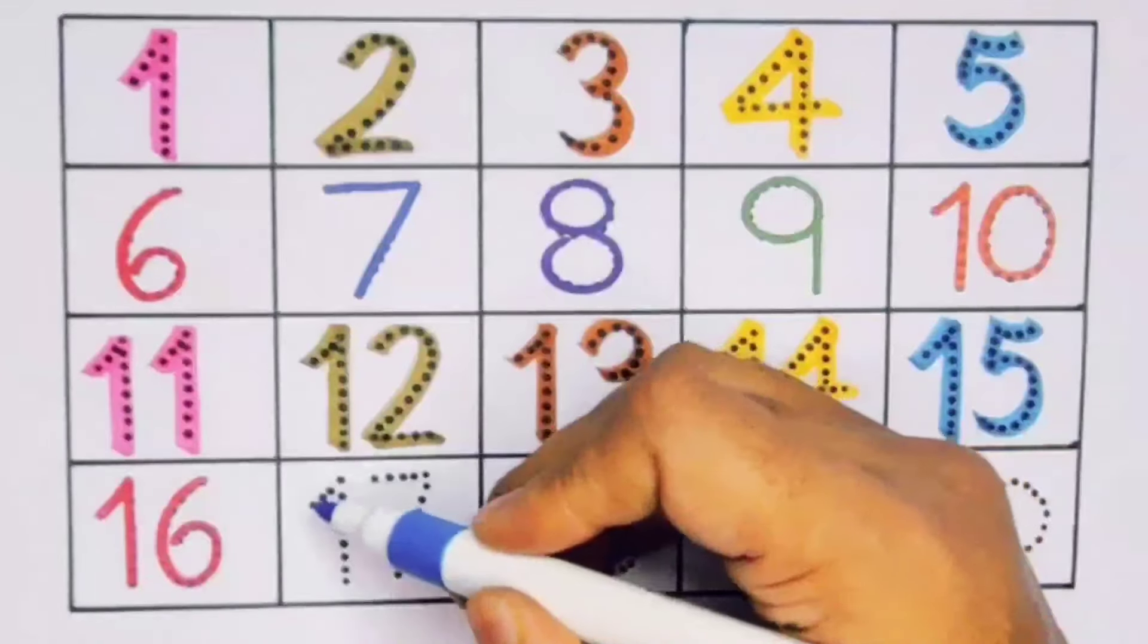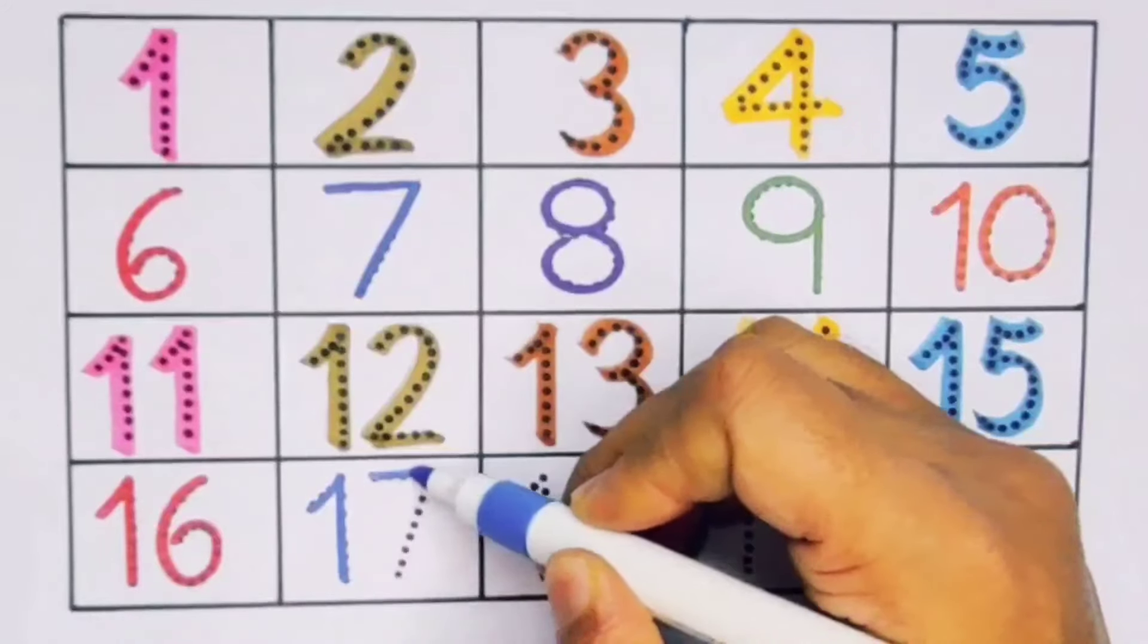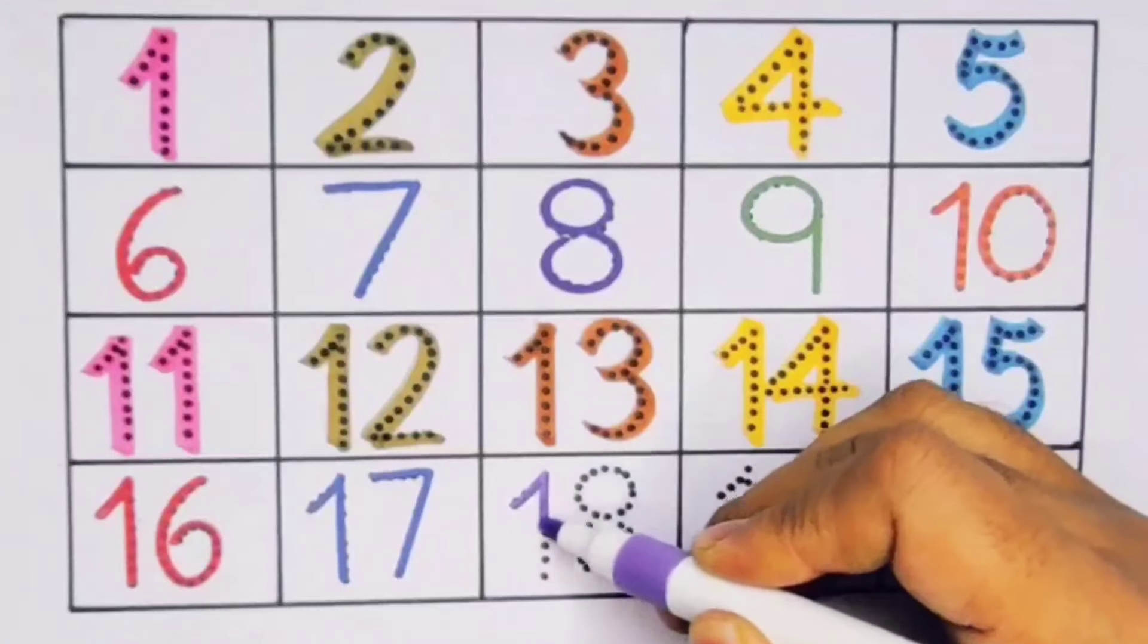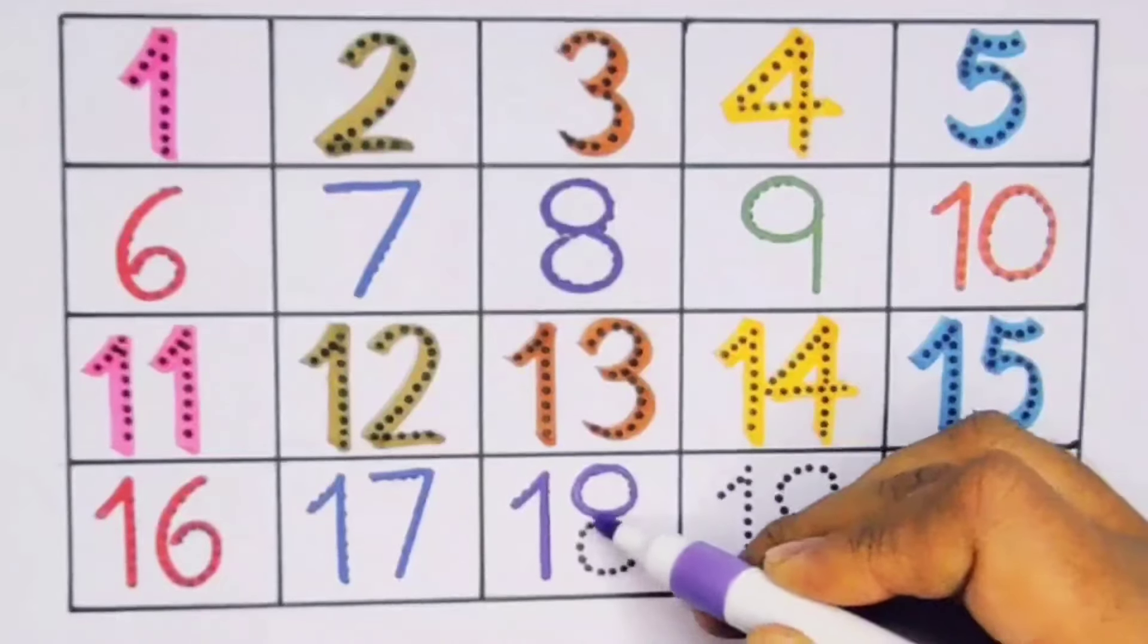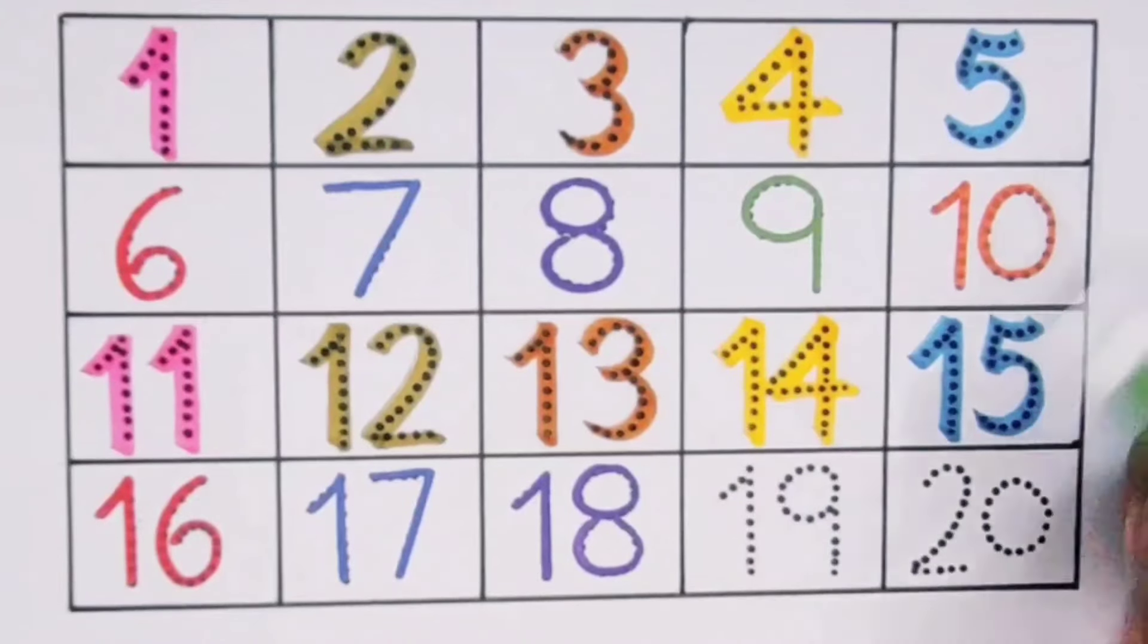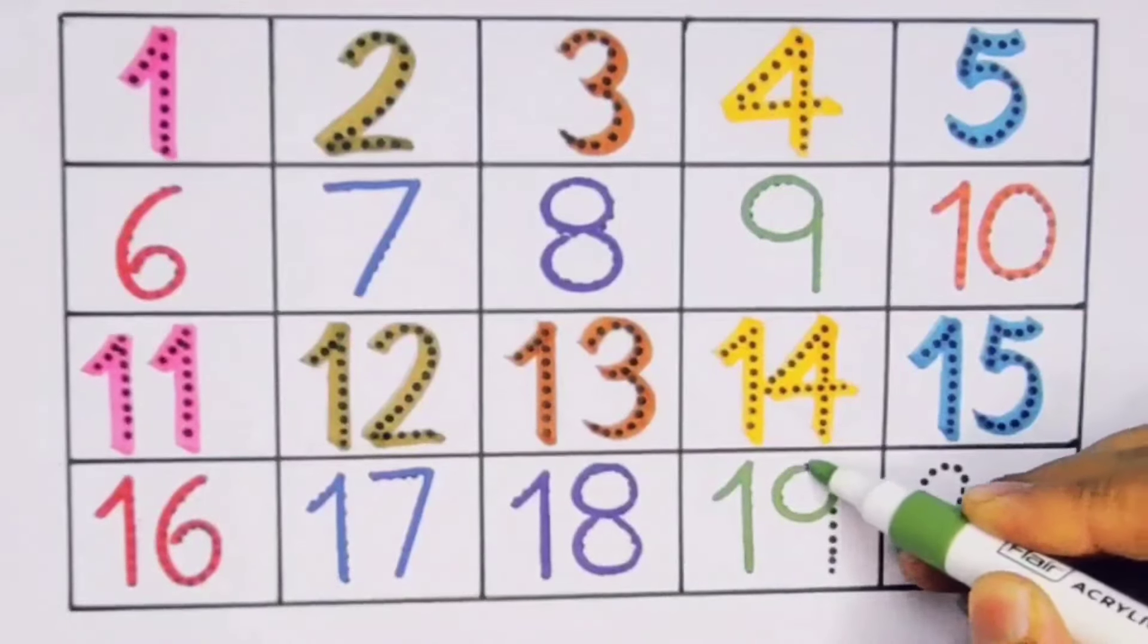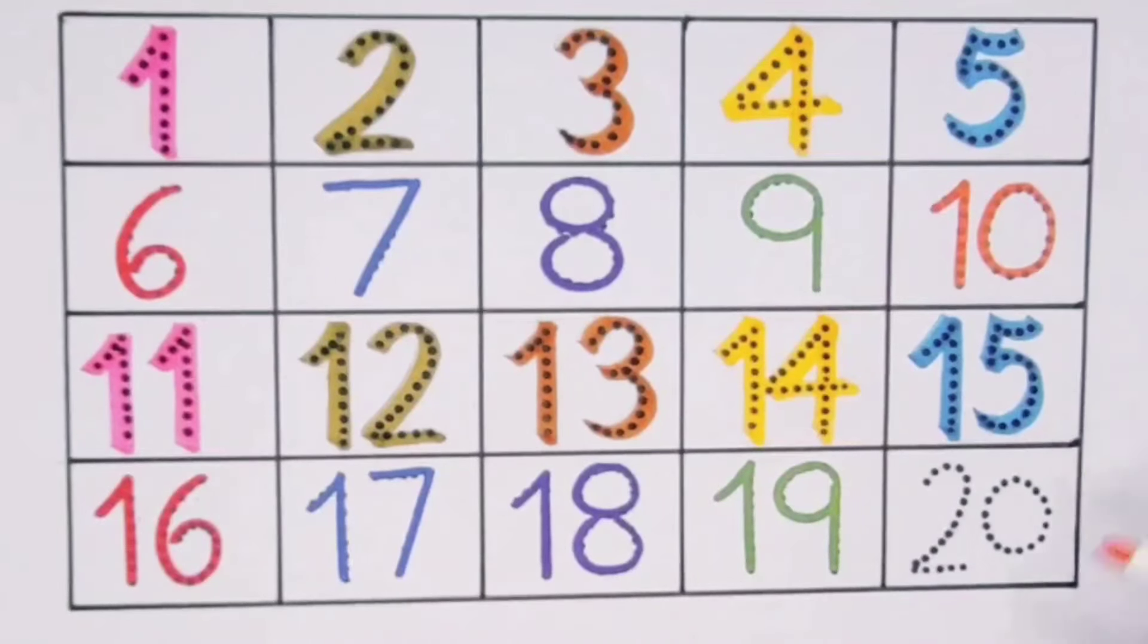Next seventeen, one seven, seventeen, number seventeen. Next eighteen, one eight, eighteen, number eighteen. Next nineteen, one nine, nineteen, number nineteen. Next twenty, two zero, twenty, number twenty.